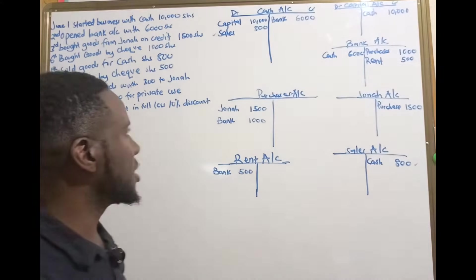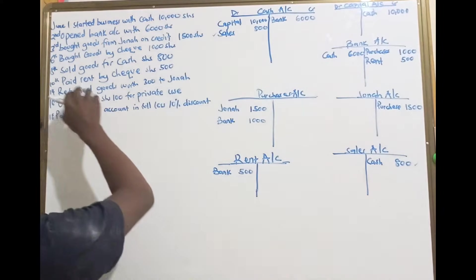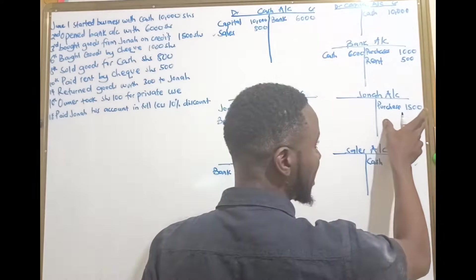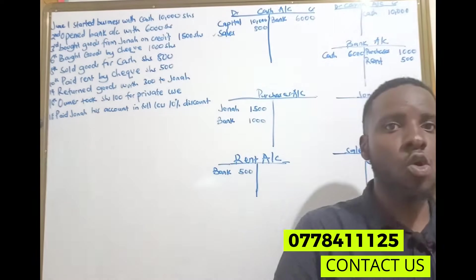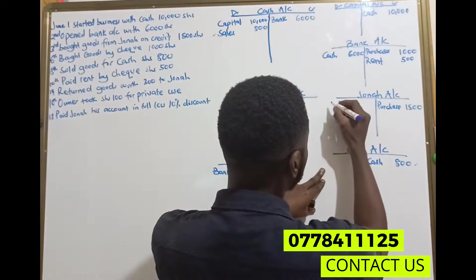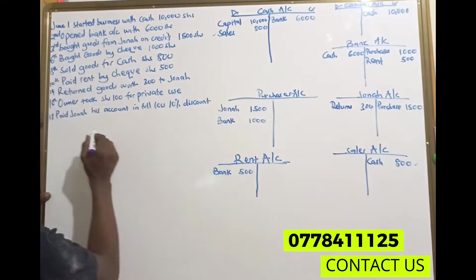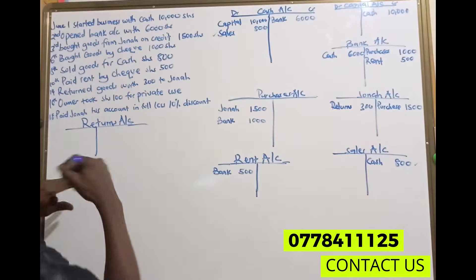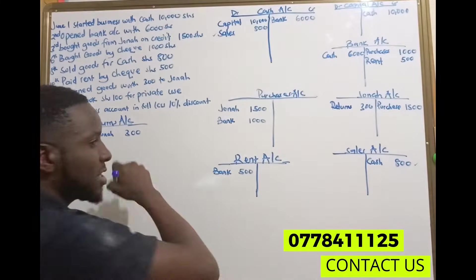The next transaction says return goods worth 300 to Jonah. Remember Jonah is one of our creditors. We bought goods from Jonah on credit. Now here they're saying we return goods worth 300 to Jonah — these are returns outwards. That means we are returning to one of our suppliers. So we go to Jonah's account and say we are returning goods worth 300. That means we are going to open up a returns account. We have returned goods to Jonah worth 300 shillings.